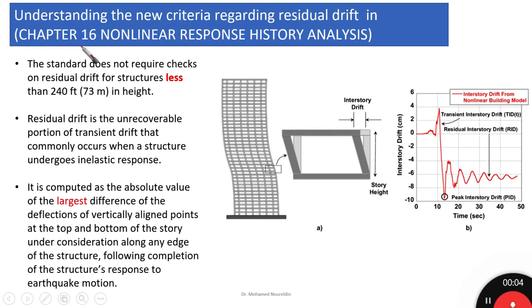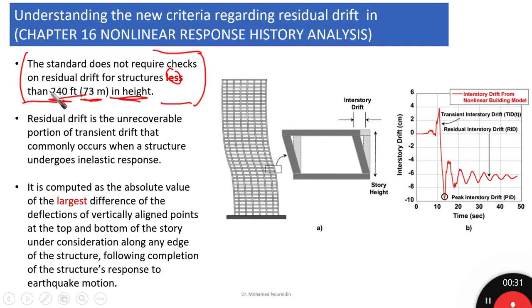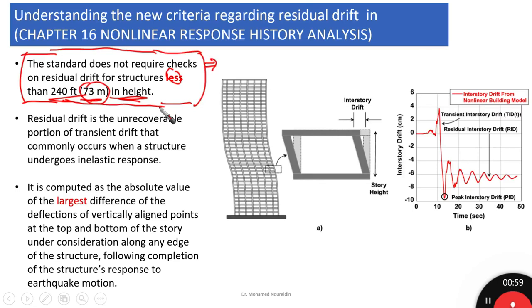In this video we are going to have more understanding about residual drift and why this criteria has been implemented in the new code. The standard does not require checks on residual drift for structures less than 200 feet or 73 meters in height. This is an important issue — it is a little bit unusual that for buildings less than this height, we do not have any criteria for residual drift, because commonly in existing structures we can find residual drift is present. Anyway, this is what ASCE is mandating now — no criteria for residual drift for buildings less than 73 meters in height.